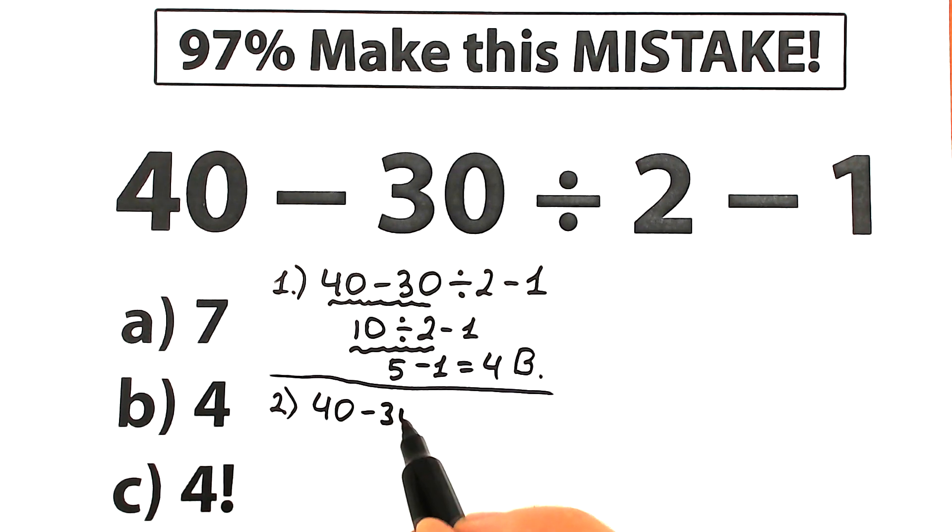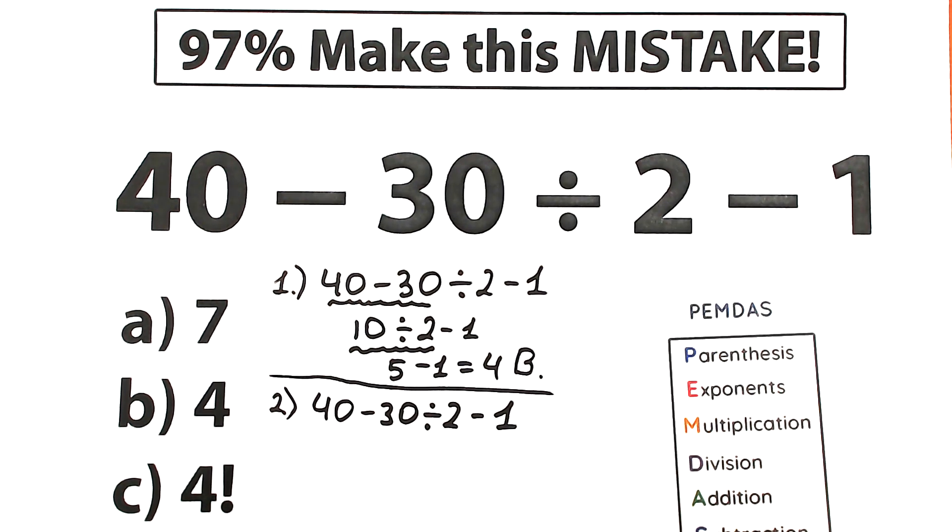So 40 minus 30, divided by 2, and minus 1. Let's look, for example, at this PEMDAS order of operation.